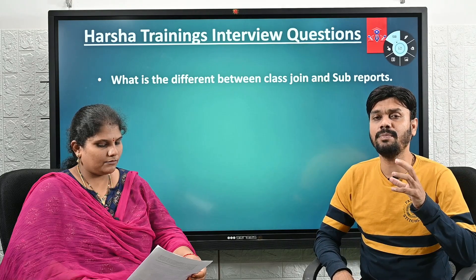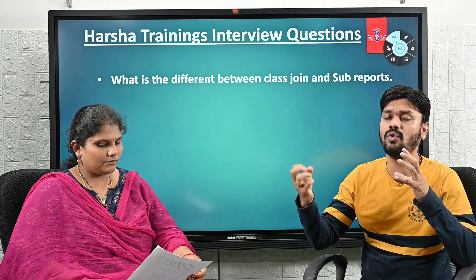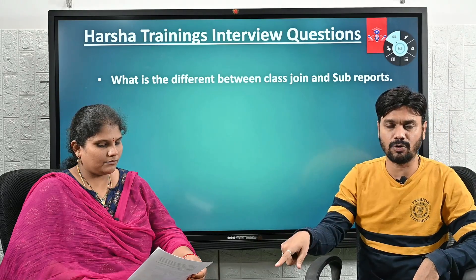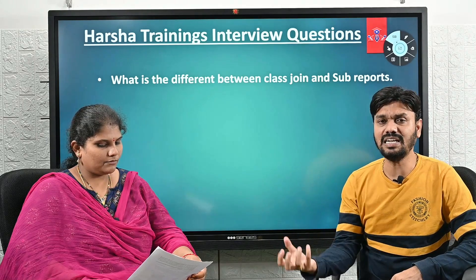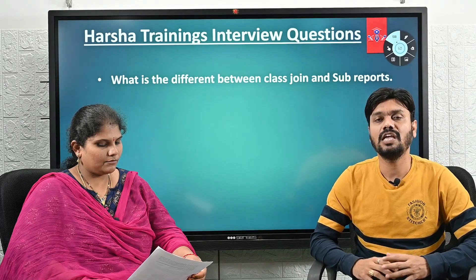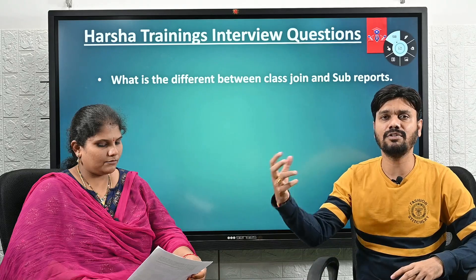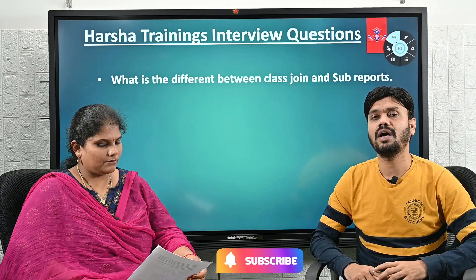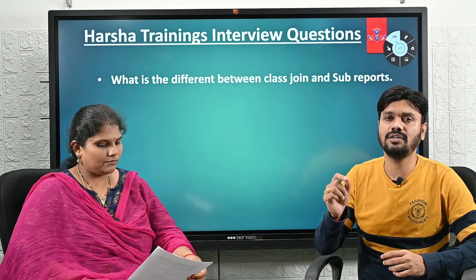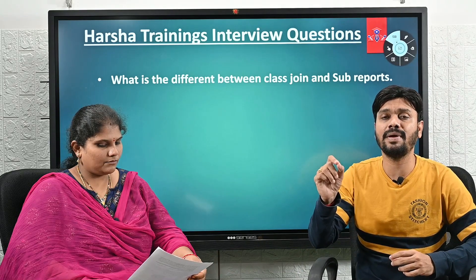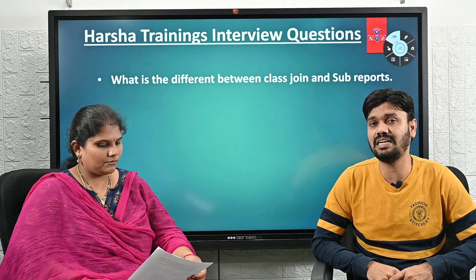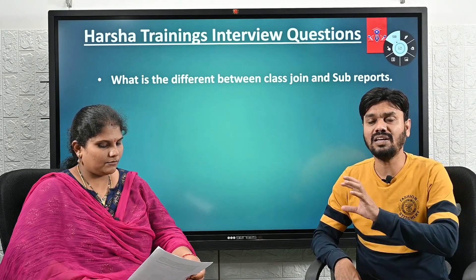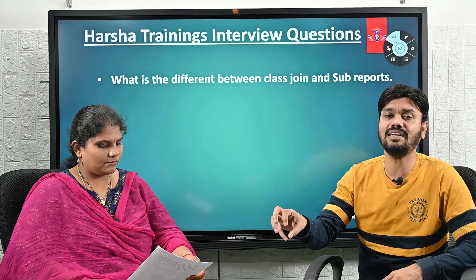Sub report works differently. A sub report means you call one Report Definition Rule from within another. When the main report executes, the sub report runs first. The result of the sub report is then submitted to the main report. In the main report you can add conditions based on sub report results — for example, a column of the main report equals a column from the sub report result set.